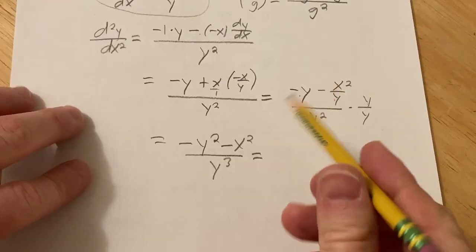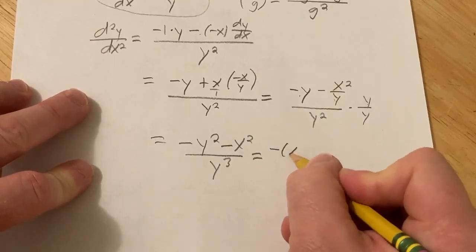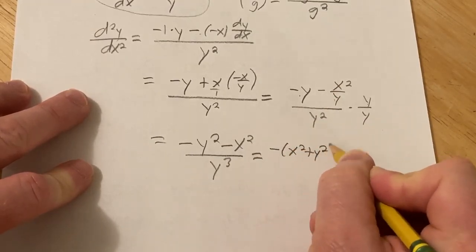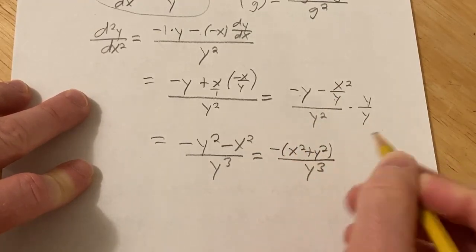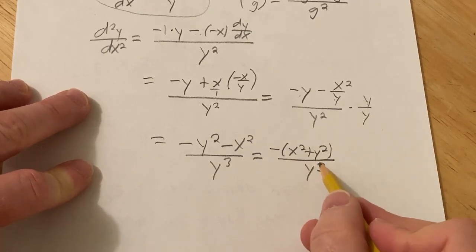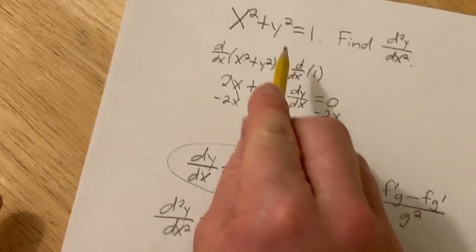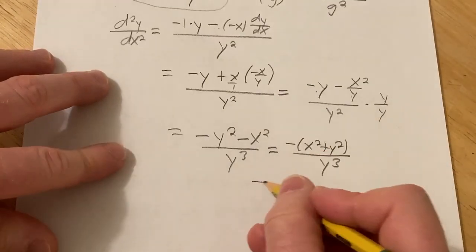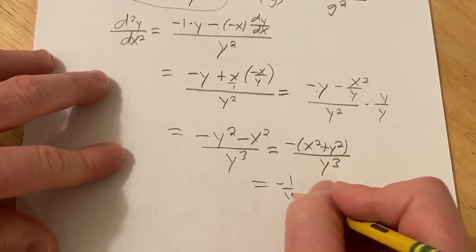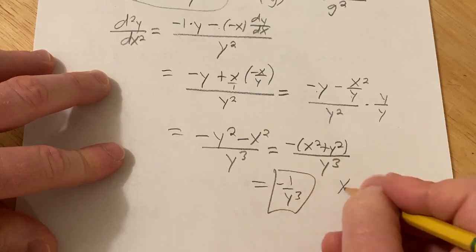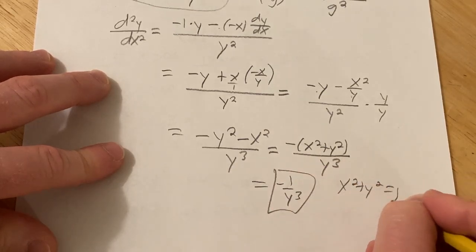And this is really cool. Look at this. You can pull out a negative here, and you get x squared plus y squared. But x squared plus y squared is special, right? It's equal to 1, right? From the original problem. So this is equal to negative 1 over y cubed. And that's because x squared plus y squared is equal to 1.